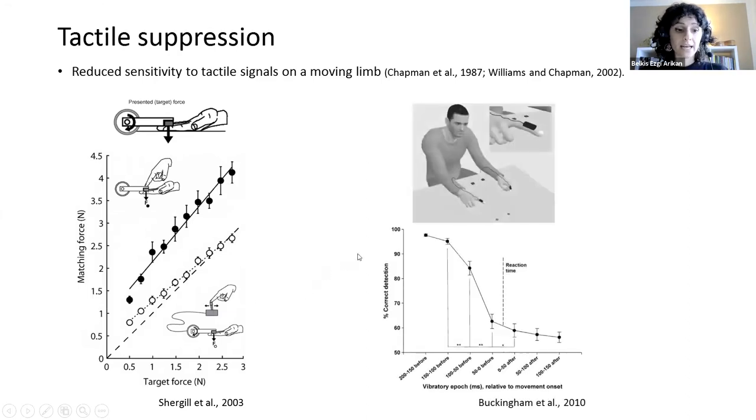Tactile suppression can also be observed during reaching movements and with external applied tactile stimulation. So here in the study, the participants are presented with a brief vibrotactile stimuli on their index finger in various phases of the reaching movement. And what the researchers observed was that the detection for this tactile stimuli was way lower right before and during the course of the movement.